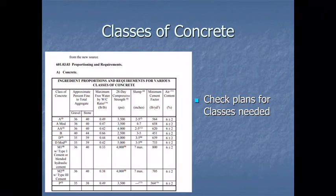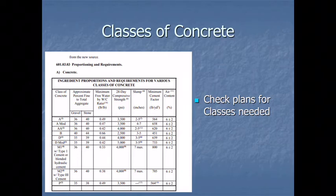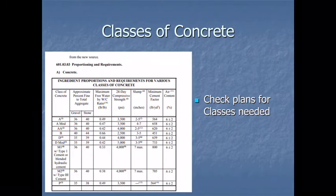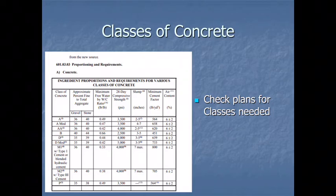Starting with the classes of concrete, KYTC has multiple different classes. Class A, as stated in our bridge components video, is the concrete used in the substructure — our footers, pier columns, pier caps, inbents, abutments, and so on. Anything in the substructure will be built out of Class A concrete.